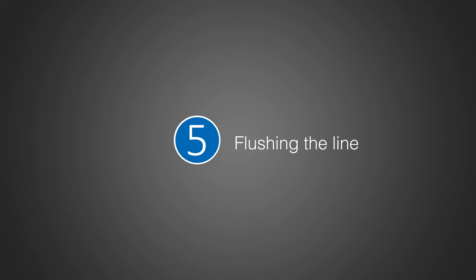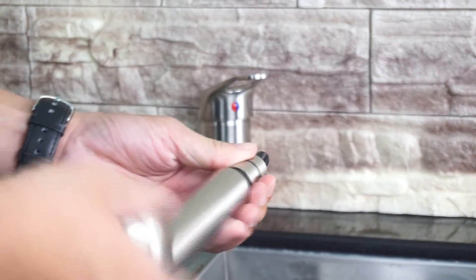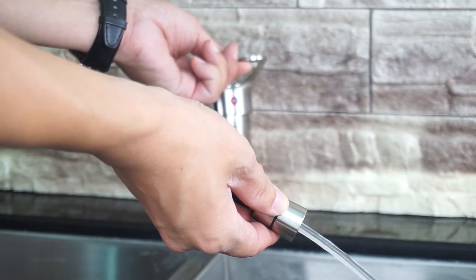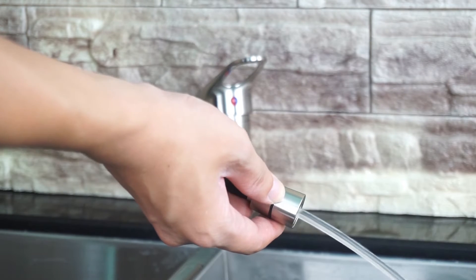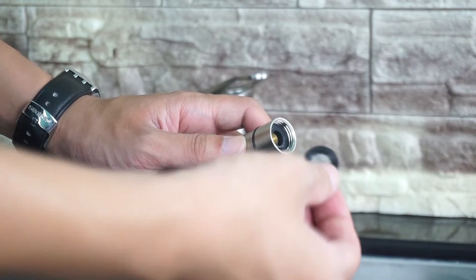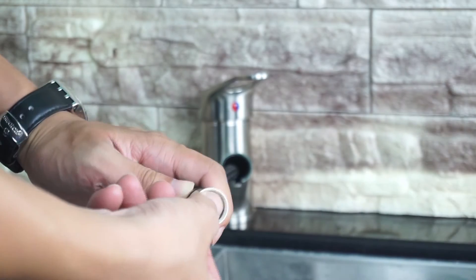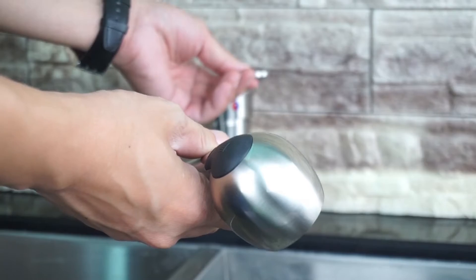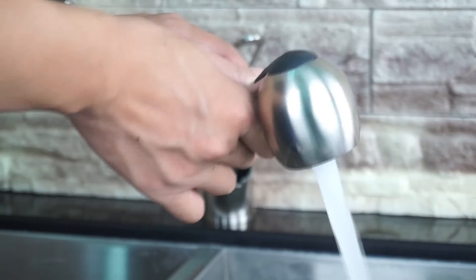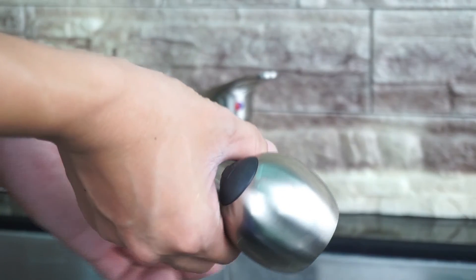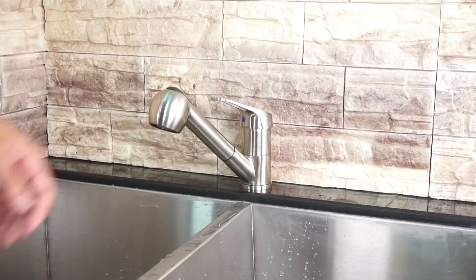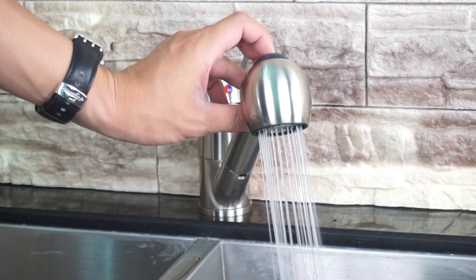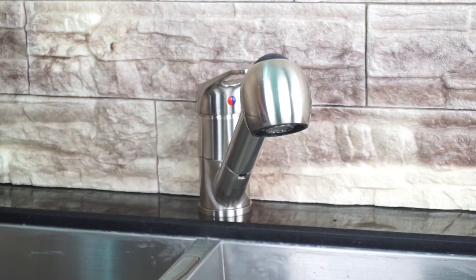Last, flush the lines: Hold onto the spray head hose, unscrew spray head and remove it along with the rubber washer. Turn on the faucet to flush the hose and feed lines for one minute to flush debris. Turn off faucet and reinstall the rubber washer and spray head.